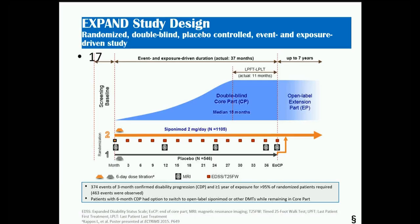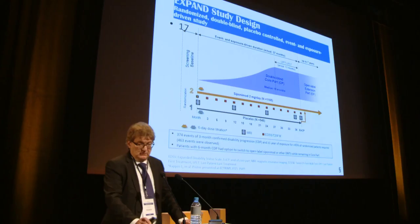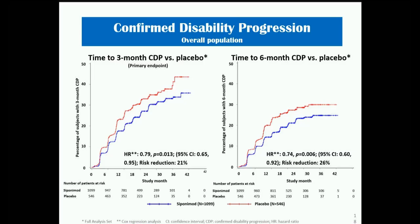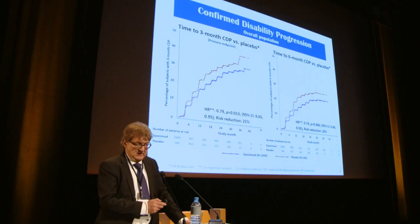The company decided to run a trial directly in SPMS under the guidance of Ludwig Kappos. An event-driven, double-blind design compared siponimod with placebo, with an open-label extension. The primary outcome of time to three-month confirmed disability progression was achieved — siponimod reduced the risk of developing disability by approximately 21%, or 26% using the more rigorous six-month confirmed disability progression outcome.